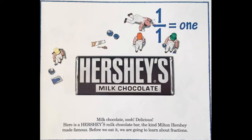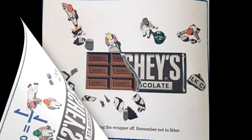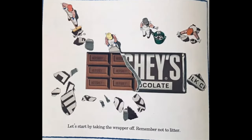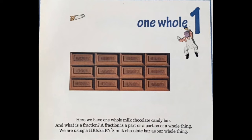Before we eat it, we are going to learn about fractions. Let's start by taking the wrapper off. Remember not to litter. Here we have one whole milk chocolate candy bar. And what is a fraction? A fraction is a part or a portion of a whole thing. We are using a Hershey's milk chocolate bar as our whole thing.